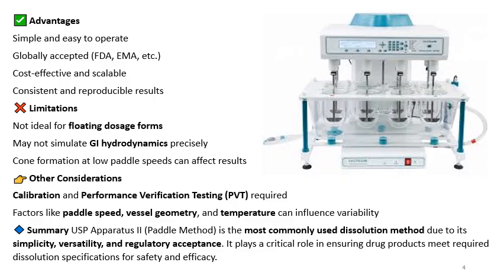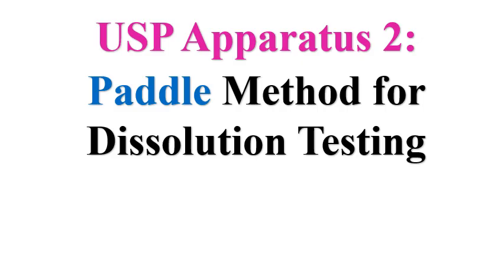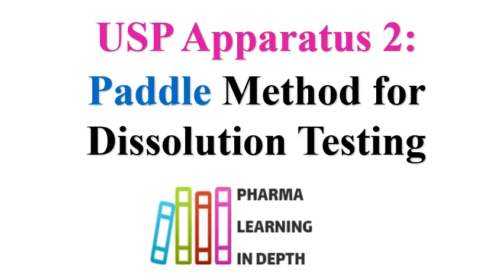In summary, USP apparatus 2 is the paddle method and is most widely used for dissolution testing of immediate release and modified release oral solid formulations. Because of its simplicity, versatility, and regulatory acceptance, it is widely adopted. USP apparatus 2 plays a critical role in ensuring drug products meet required dissolution specifications for safety and efficacy. When developing a dissolution method, if the formulation is not floating, you can directly use USP apparatus 2 to get a better release profile, as it can be operated with different paddle speeds and media volumes.